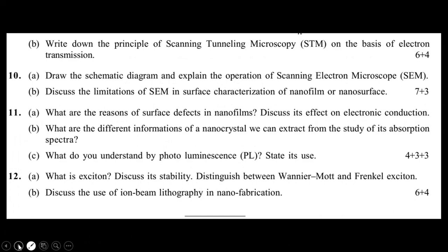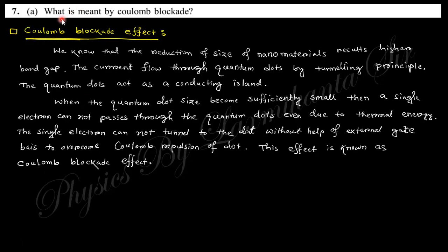So let's start. First question says: what is meant by coulomb blockade? Actually, this question was already discussed in 2022. When you reduce the size of nanomaterials, the band gap is higher because the potential barrier will be higher. The band gap is proportional to 1 by r, so the current flow through the quantum dot follows the tunneling principle.